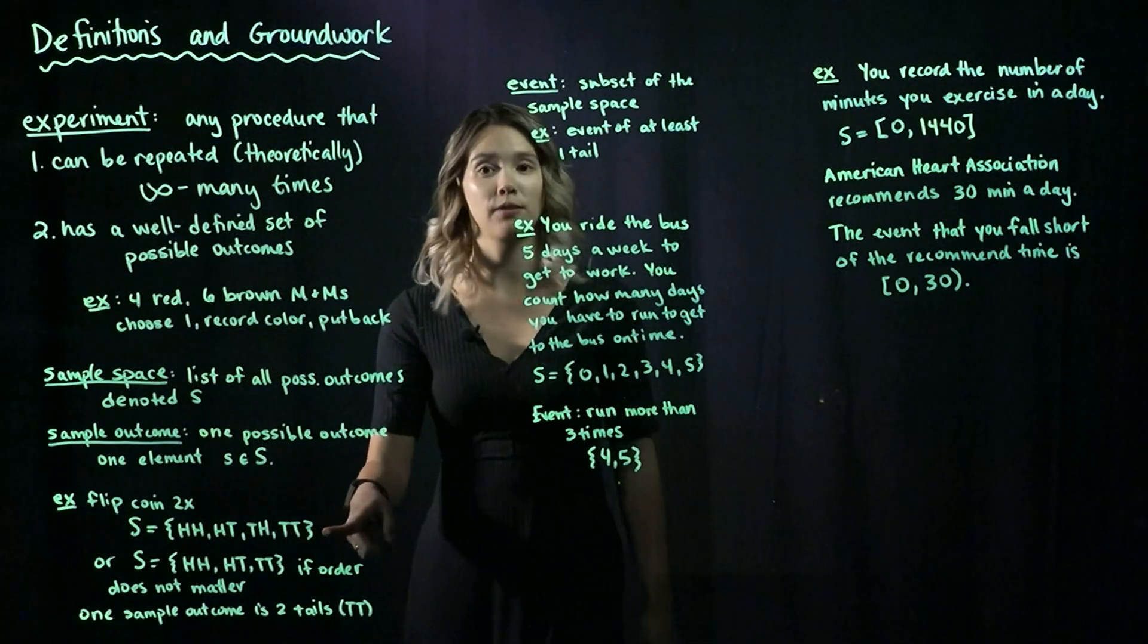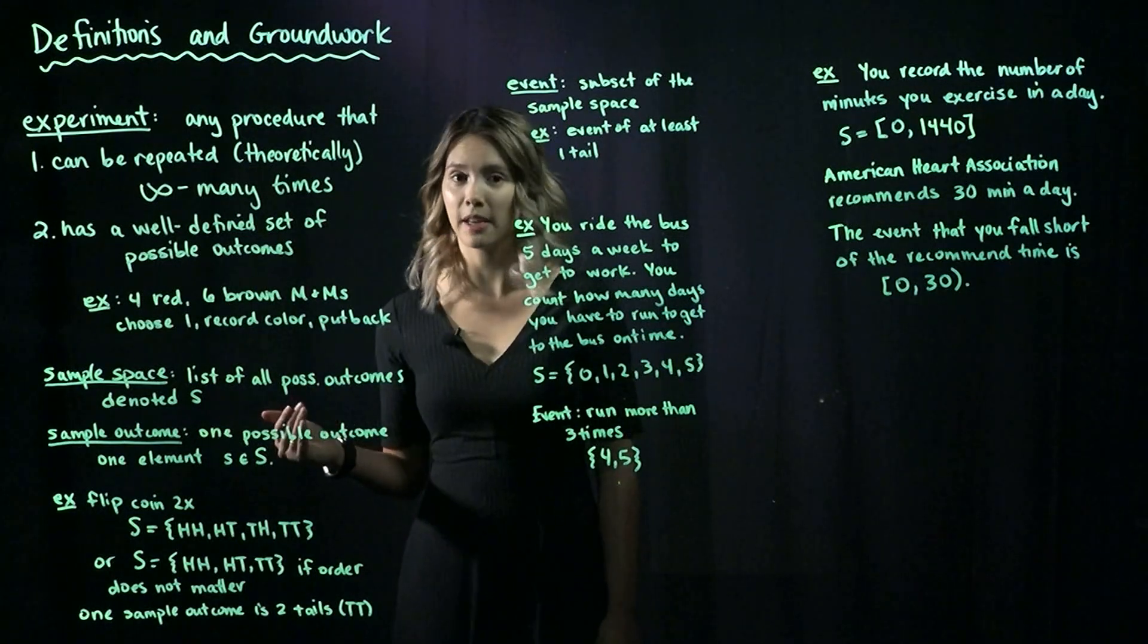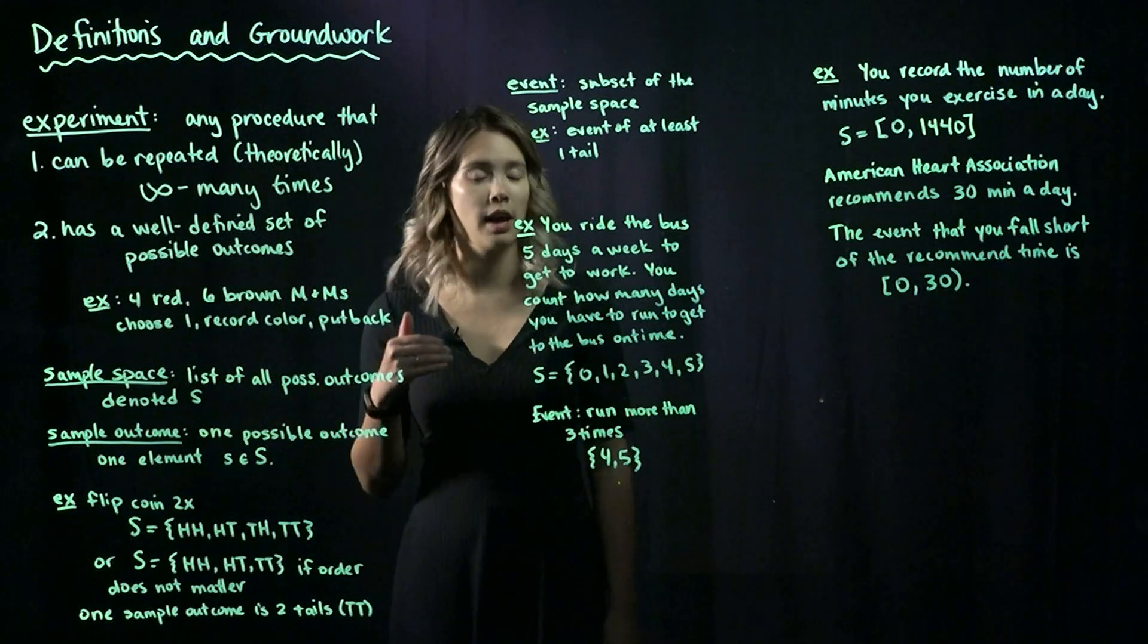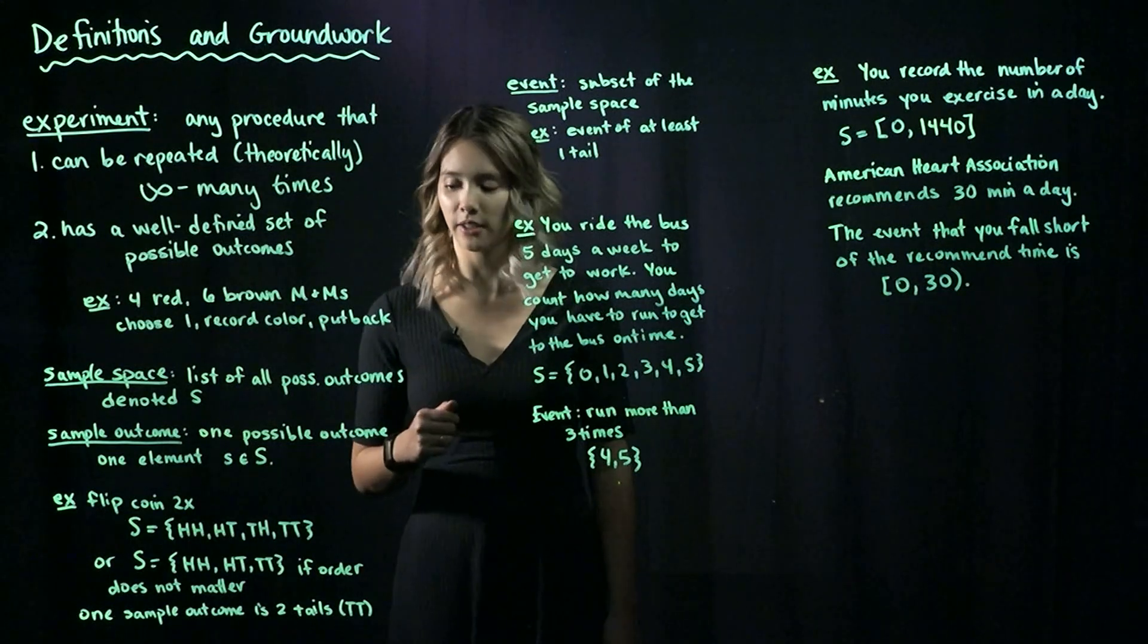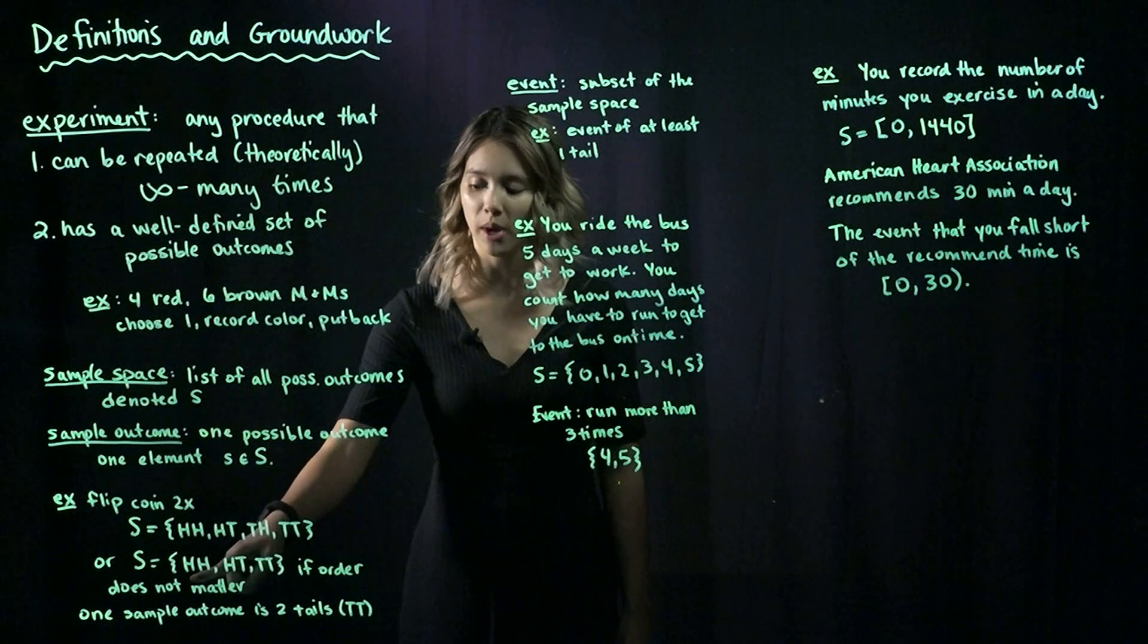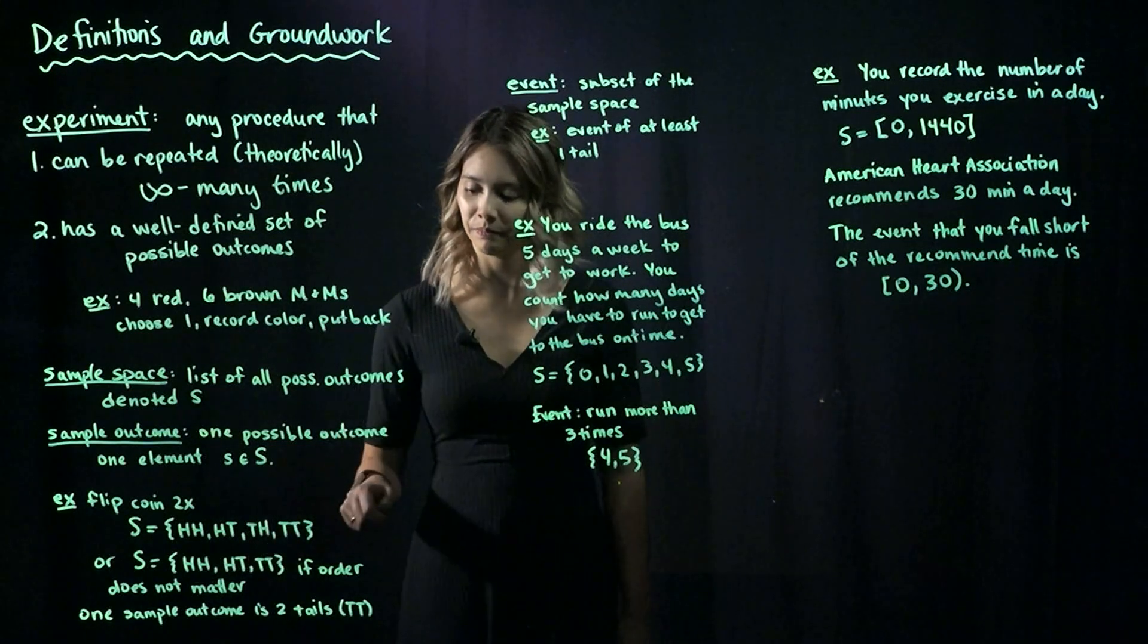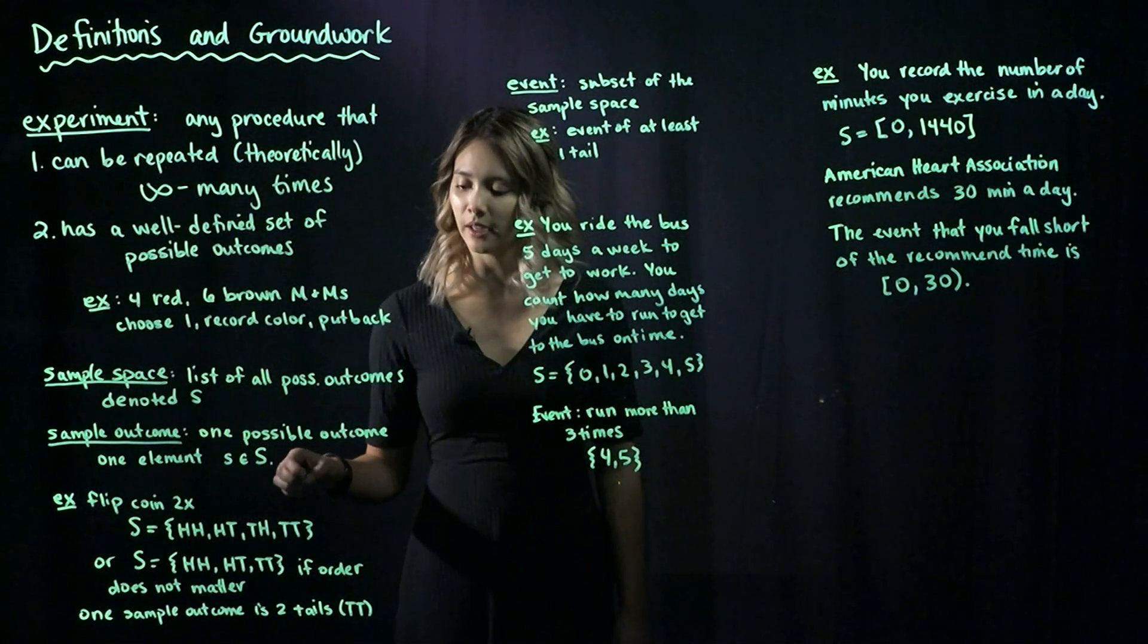This first sample space is if the order of the coin flips matters. If the order of the coin flips does not matter to me, so if I just want to know how many heads and how many tails there are, then we could write our sample space like this: two heads, two tails, and one of each.